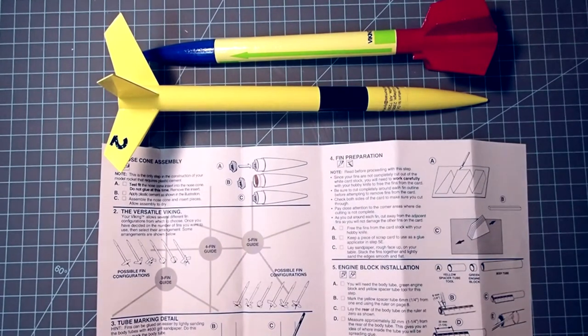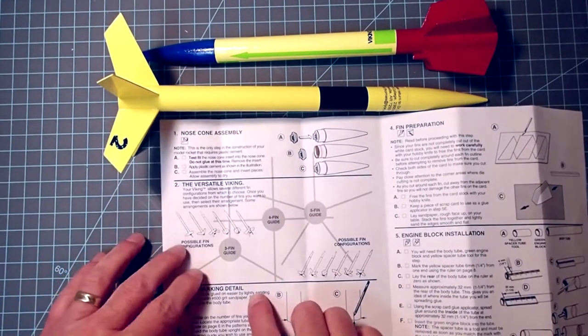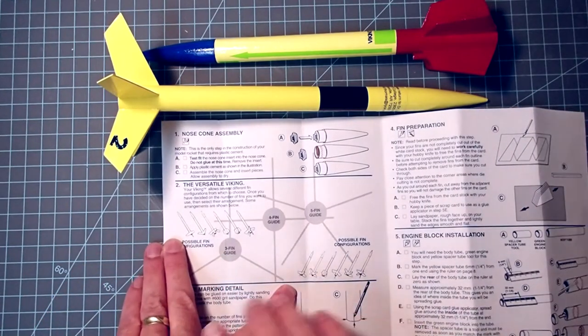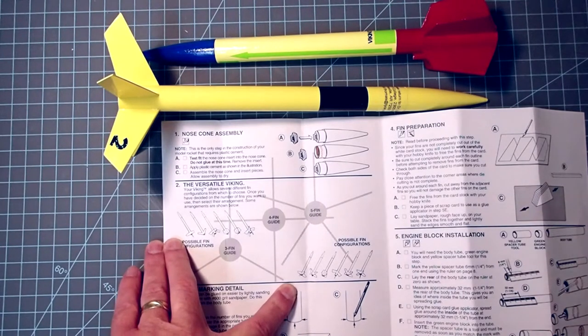The Estes Viking Model Rocket is one of the most versatile on the market today. And if you've never built one of these, I highly recommend doing so. In fact, build a few of them because, as you can see in the instructions here, there are lots of different configurations. So you can build this as a 3-fin, a 4-fin, or a 5-fin rocket. And the fins are such that you can turn them in just about any direction and they'll still be stable.